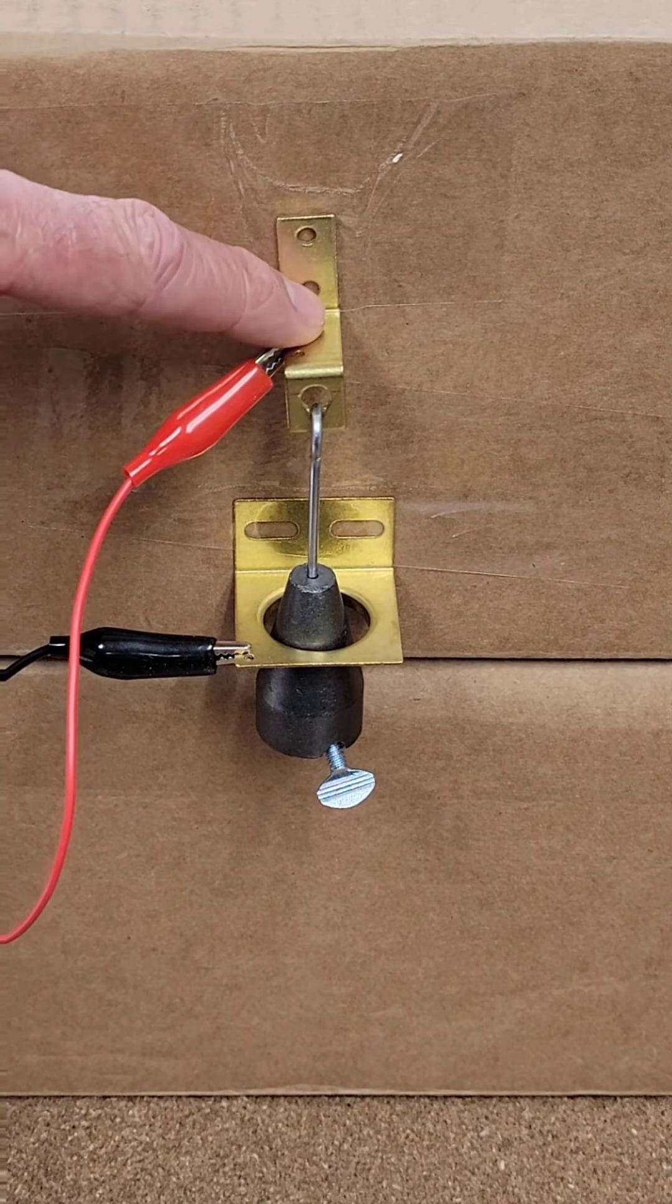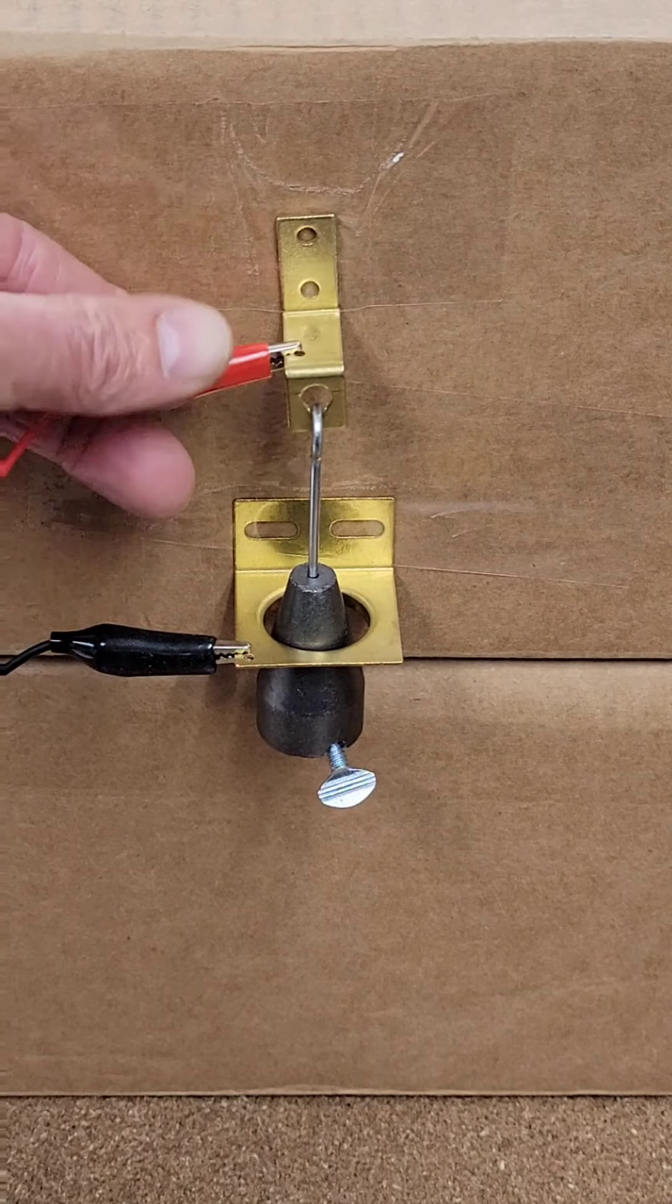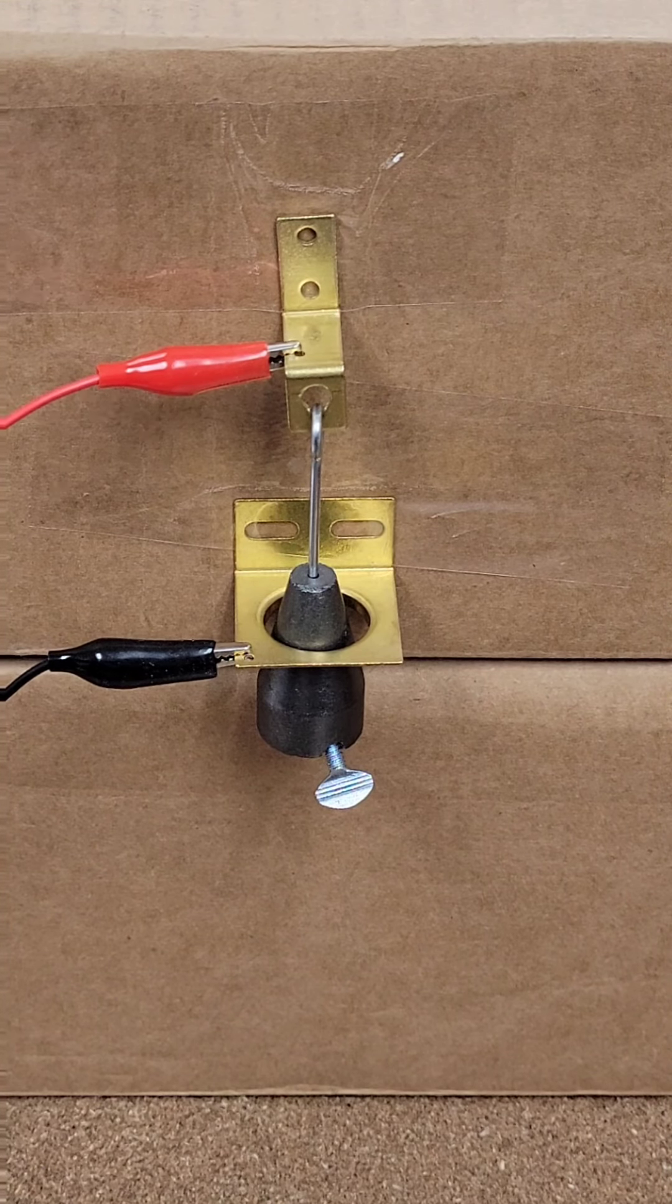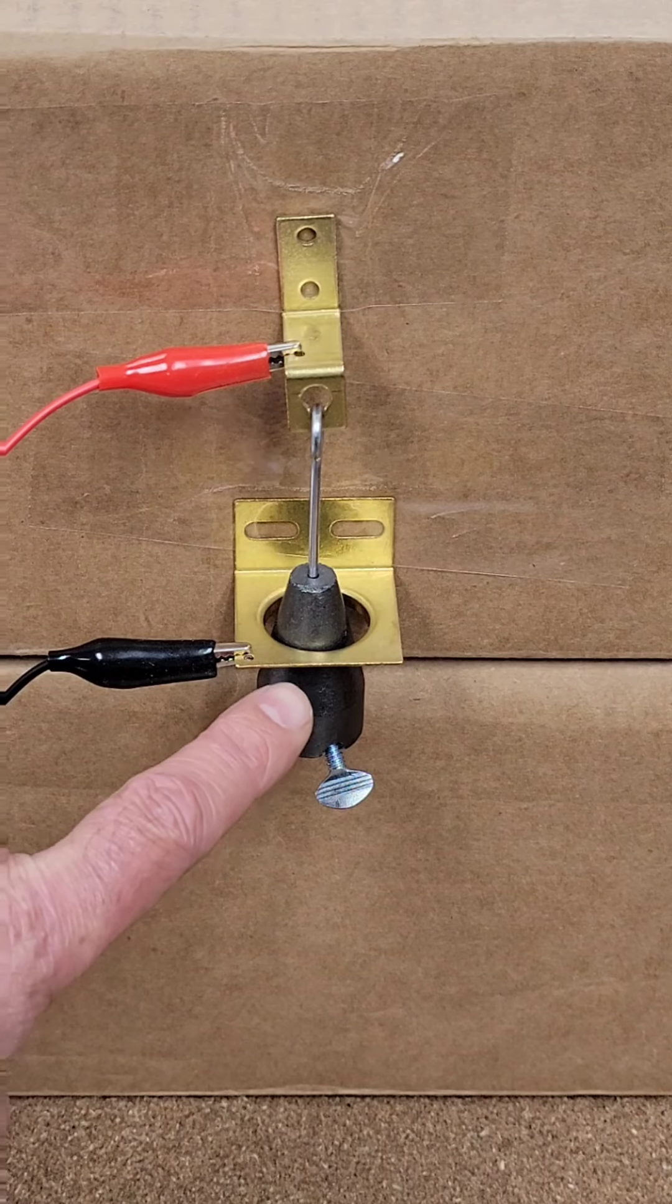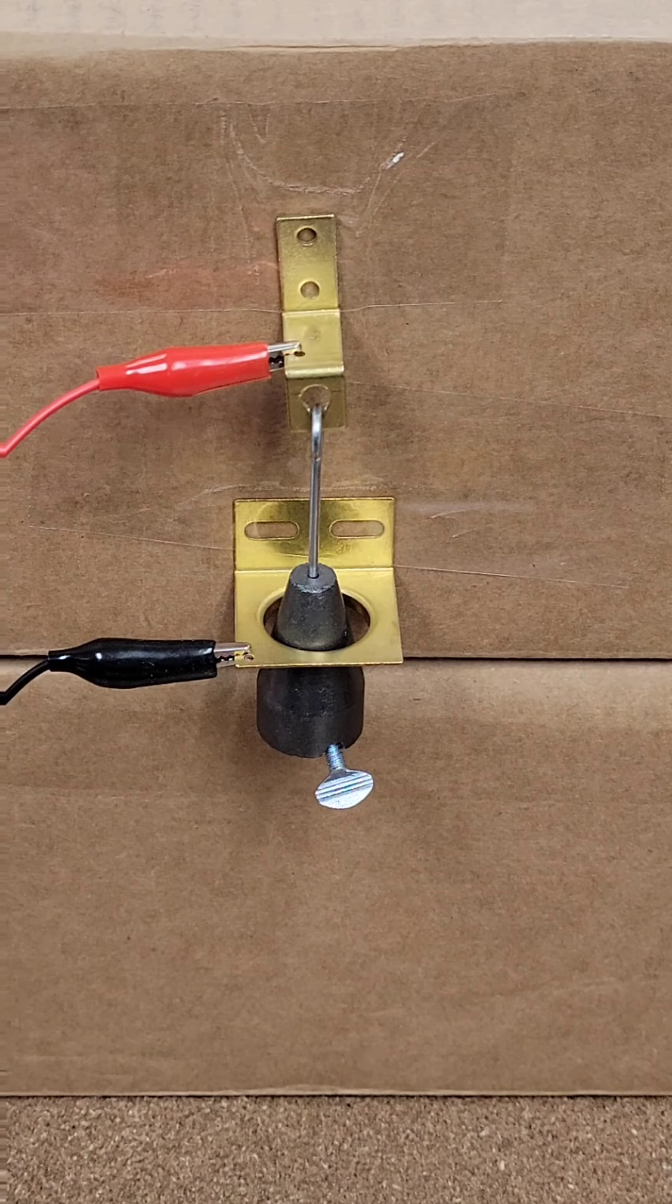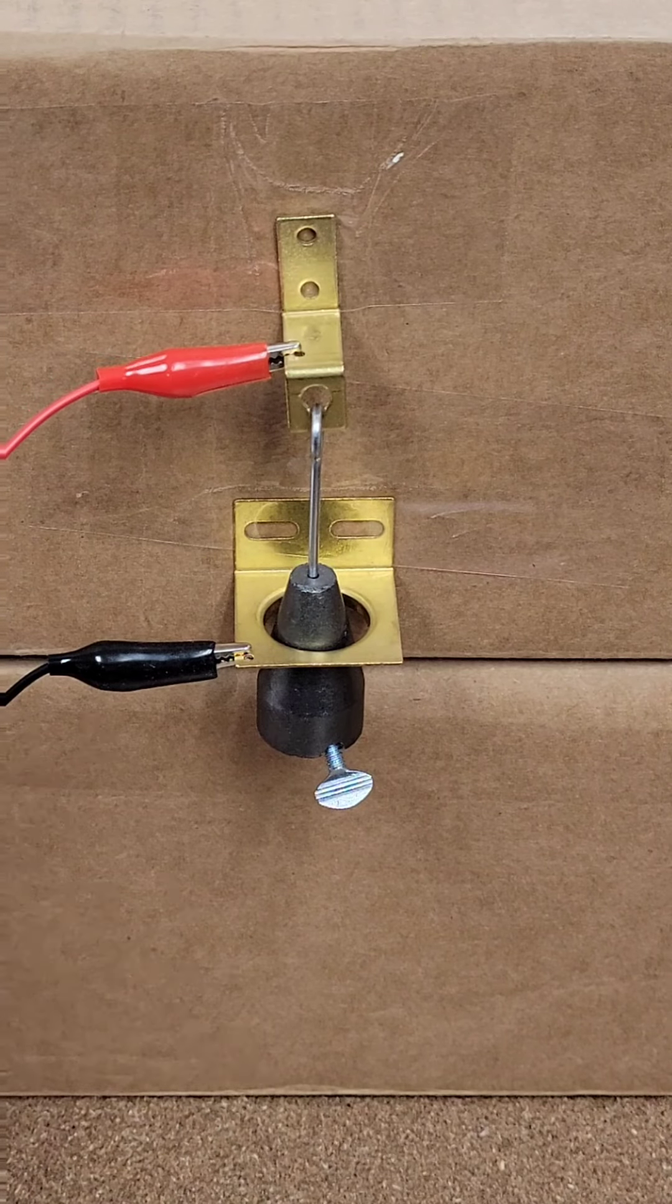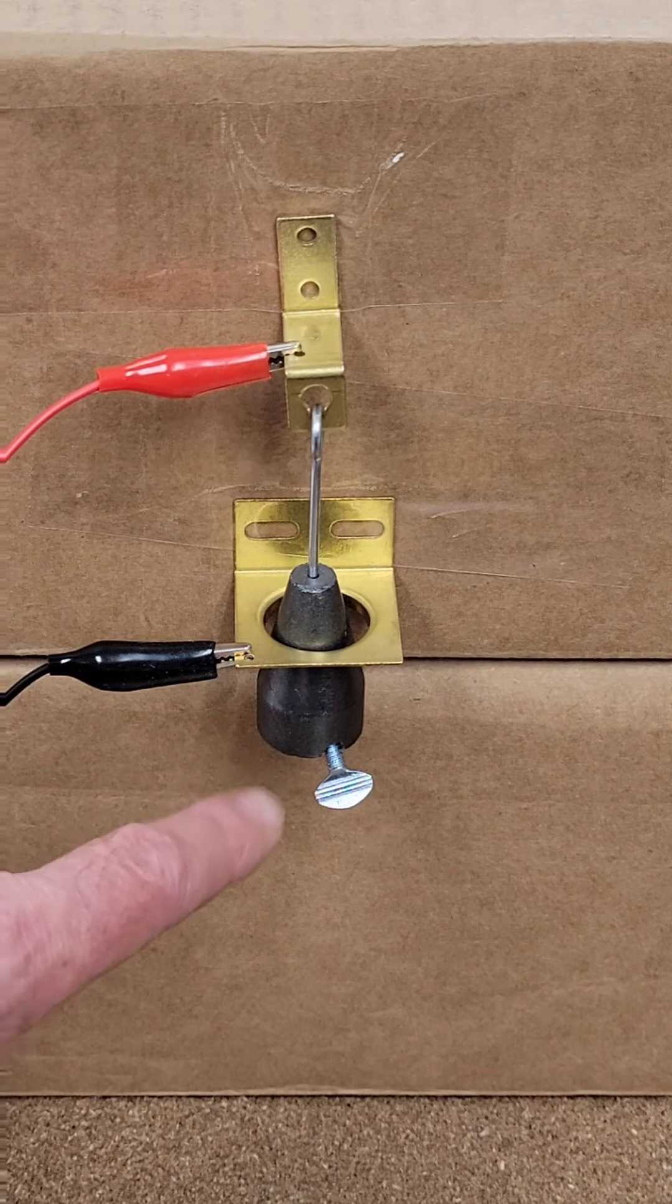So essentially you have wires here. These alligator clips are just showing you how it's going to be wired, obviously going to be permanent. You've got a black one on the bottom. So right now when the plumb bob is not touching it's open, there's a current can't flow through there because there's nothing touching it.